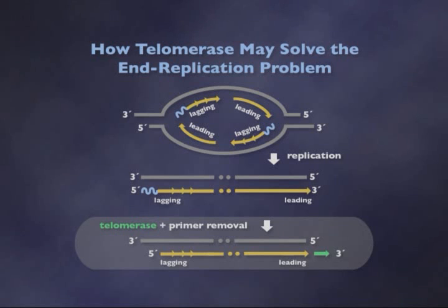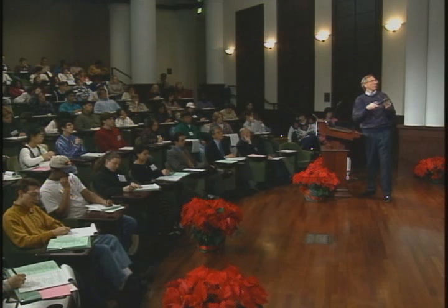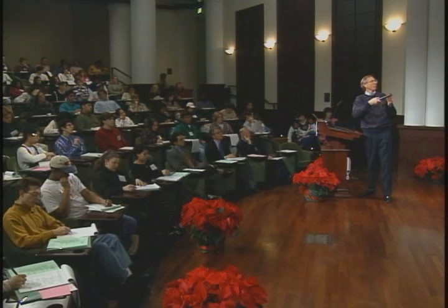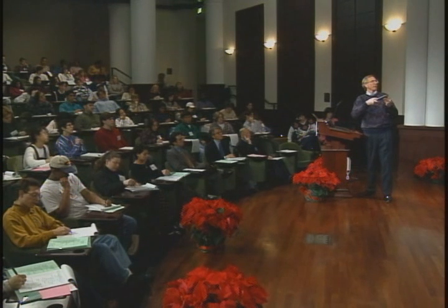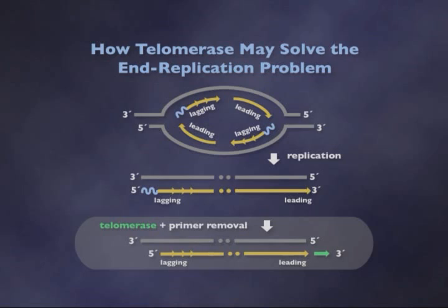By removing the primer from the left end of the chromosome and by extending the right end with this novel RNA-protein enzyme, you're back to having exactly the ends that you had at the beginning. The replication problem is solved.